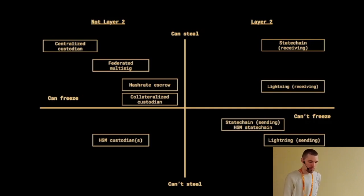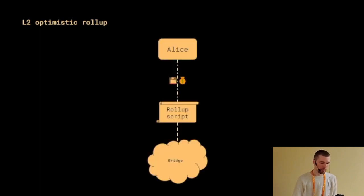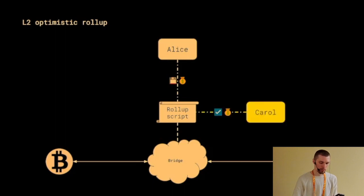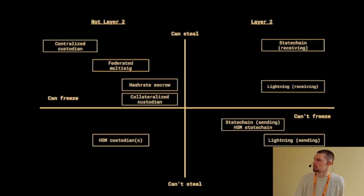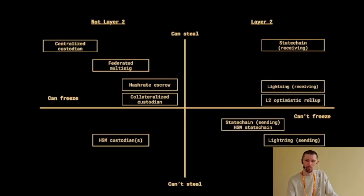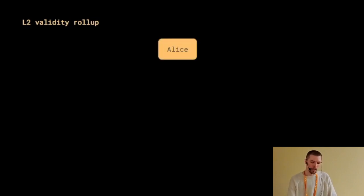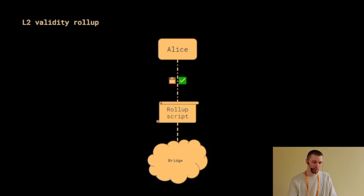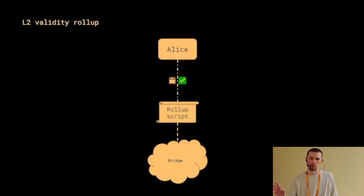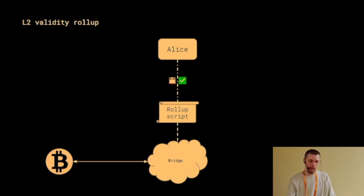I'm going to skip the optimistic roll-up, which is more of a theoretical bridge you can't build on Bitcoin today, and go straight to the last bridge I wanted to cover: the L2 validity roll-up. This is also a bridge you can't build on Bitcoin today, but it has been proposed and implemented on other blockchains. The basic idea is that you have a validity roll-up operator Alice, and for every new block created in the destination system, Alice includes a validity proof along with the block data in a transaction posted to the roll-up script on layer one. With that, users can be certain they can always get their money out, and neither Alice nor anyone else can steal their money from the bridge.